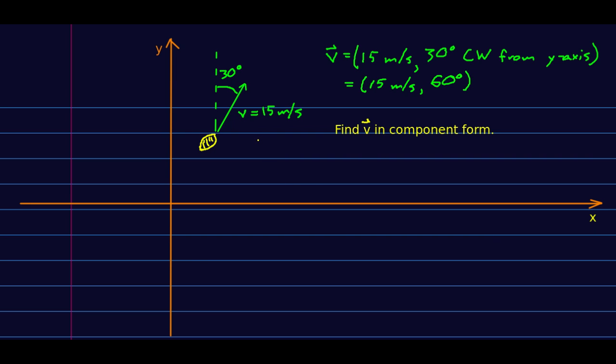So the first thing to do is just draw a little more. Before you do trigonometry you should know what the triangle is that you're talking about. Never do trigonometry without drawing the triangle. So here is v and here are its components. And we want to know vx and vy and we know that this is 30 degrees and we know that this is 15 meters per second. So we can just do usual trigonometry.